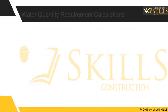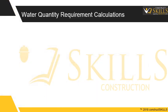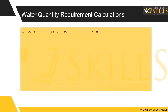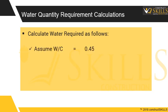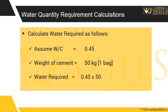The quantity of mixing water required per bag of cement is calculated as follows. For a water cement ratio of 0.45, the water required is 50 times 0.45 — the weight of one bag of cement — which equals 22.5 liters.